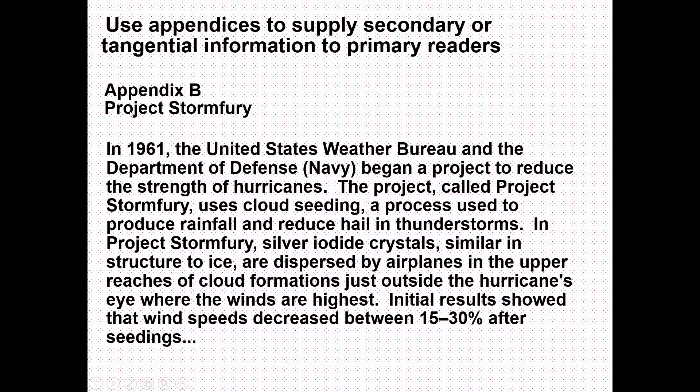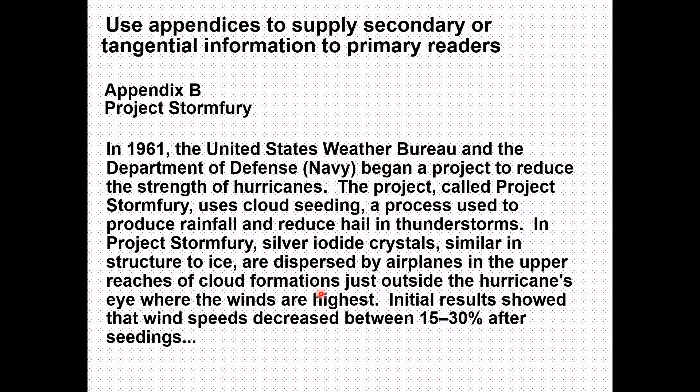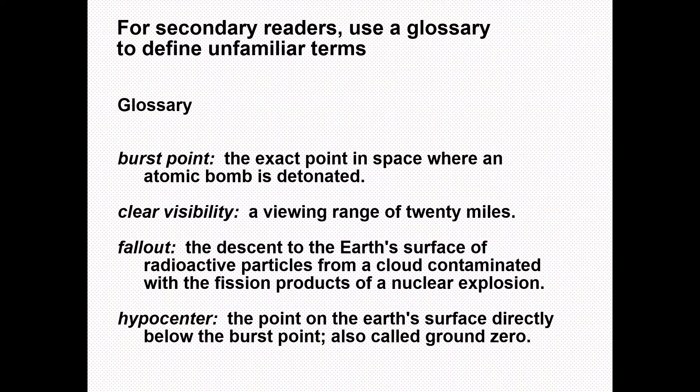You should use appendices to supply secondary or tangential information to primary readers. Here we have an example of Appendix B — Project Stormfury. In 1961, the United States Weather Bureau and the Department of Defense began a project to reduce the strength of hurricanes. The project, called Project Stormfury, used cloud seeding — a process used to produce rainfall and reduce wind in thunderstorms. Silver iodide crystals of a specific structure were dispersed by airplanes in the upper reaches of cloud formation just outside the hurricane's eye where winds are highest. Initial results showed that wind speed decreased by 15 to 30 percent.